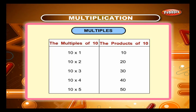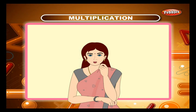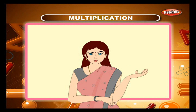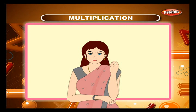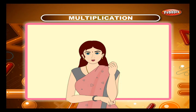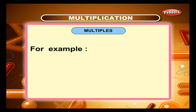An easier method to multiply a given number by 10: put 1 zero on the right of the given number. For example, 2 into 10 is equal to 20. To multiply a given number by 100, put 2 zeros on the right of the given number. For example, 2 into 100 is equal to 200.